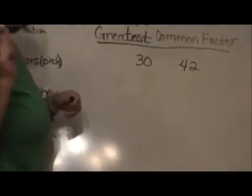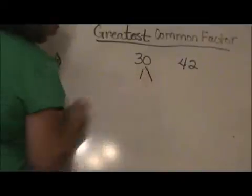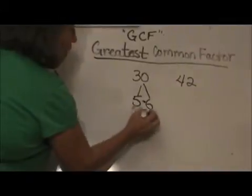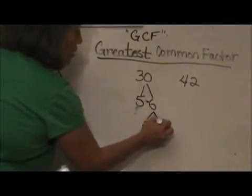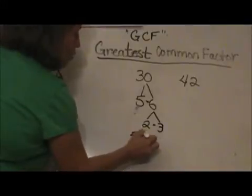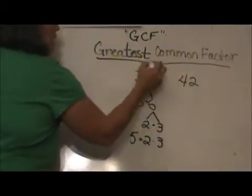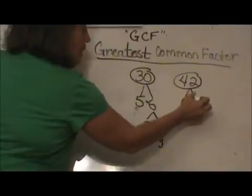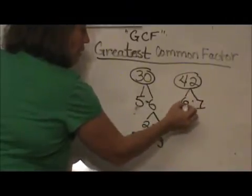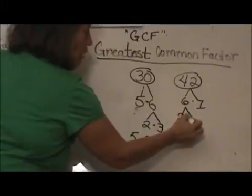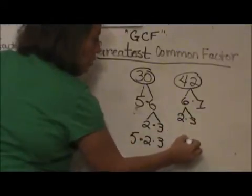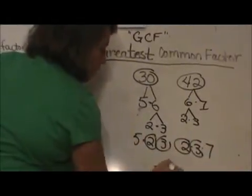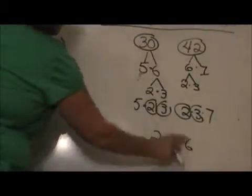Here's our first example in fast form. First I'm going to factor 30: 5 times 6 is 30. 5 is prime so I don't have to bring it down. The 6 is 2 times 3, so I write 5 times 2 times 3. I'm also going to find the prime factors of 42 using a factor tree. That's 6 times 7. 7 is prime, but I can factor 6 down to 2 times 3, so the prime factorization is 2 times 3 times 7. I circle the common factors and multiply — so my greatest common factor is 6.